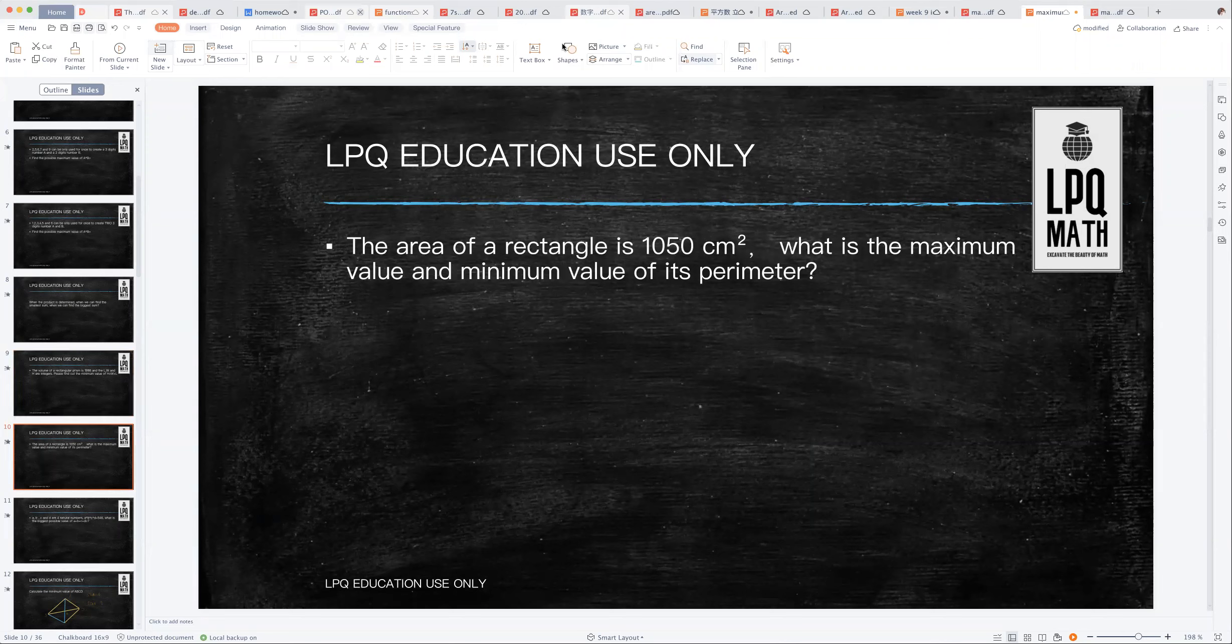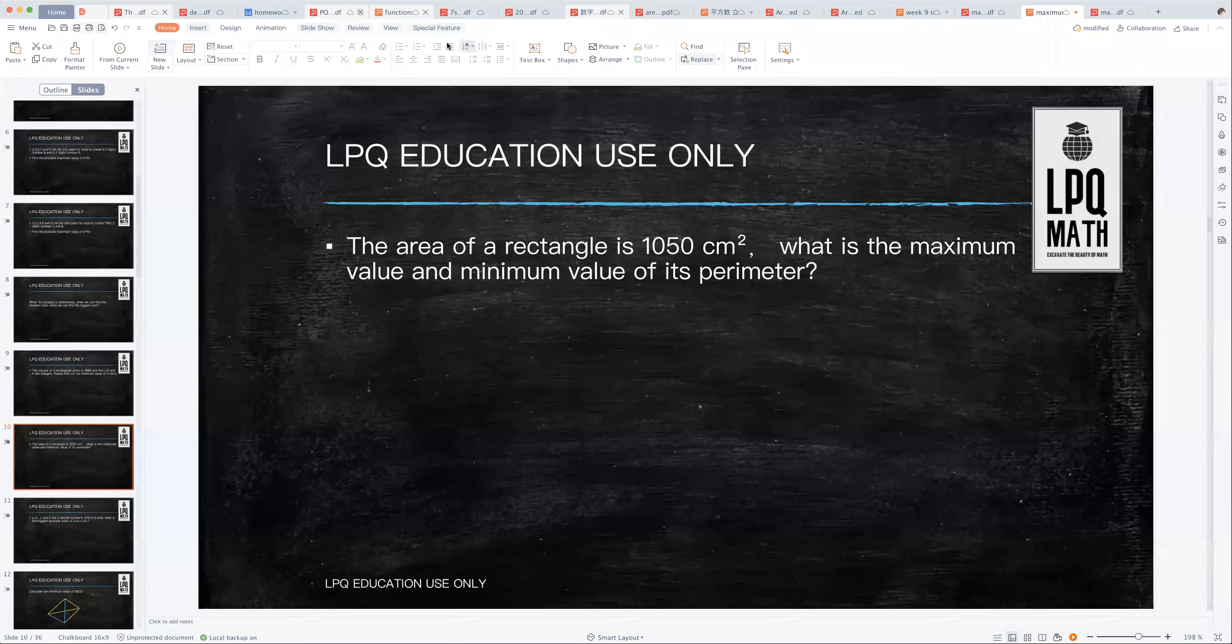The area of a rectangle is 1050 centimeters square. What is the maximum value and the minimum value of its perimeter? This is something very useful.